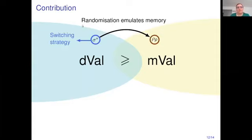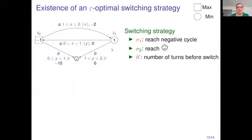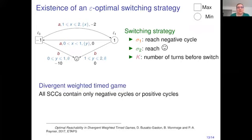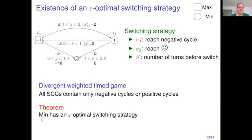We have shown how to use randomization to emulate memory from a switching strategy. Now we need to prove that an epsilon-optimal switching strategy exists to conclude the proof. A switching strategy is a combination of two memoryless strategies, and in memoryless strategies the sequence of delays cannot tend to zero. We prove this existence for divergent weighted timed games where all SCCs contain only negative or positive cycles, and we have shown that min has an epsilon-optimal switching strategy, where the delay depends only on epsilon and k.